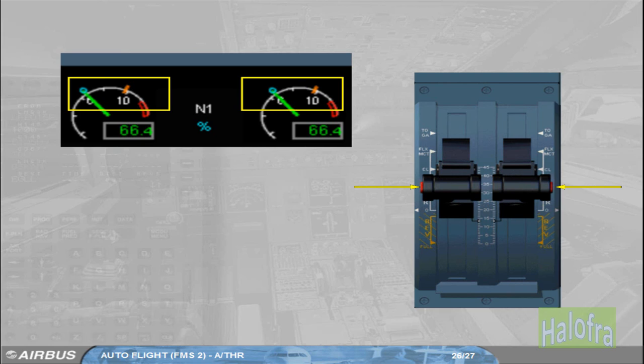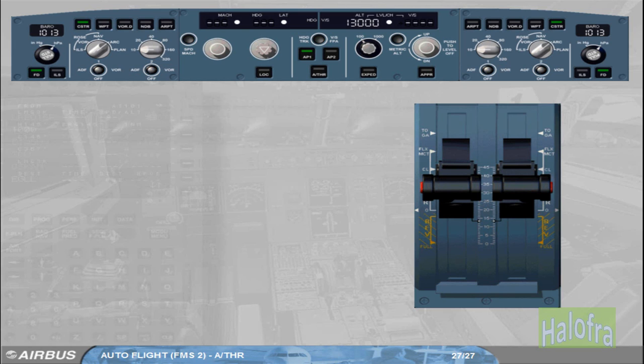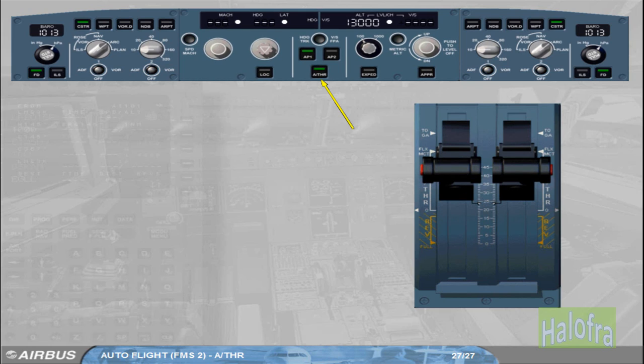Note: pressing at least one push button for more than 15 seconds will inhibit the Autothrust, including alpha floor protection, for the remainder of the flight. When the Autothrust is off during flight, in order to turn it on again, press the Autothrust push button on the FCU with the thrust levers in or below climb detent.